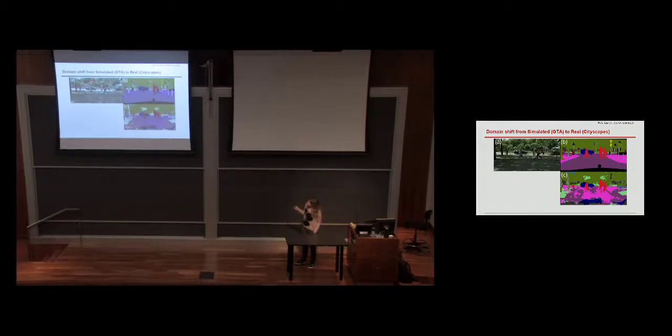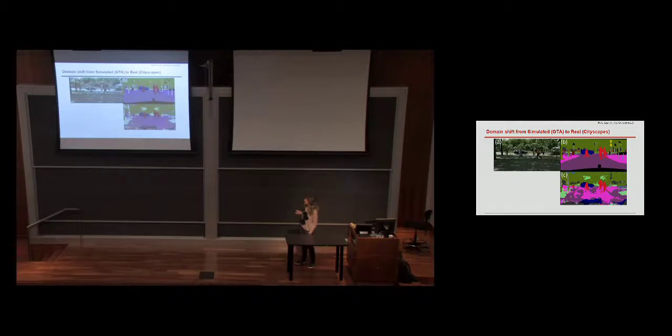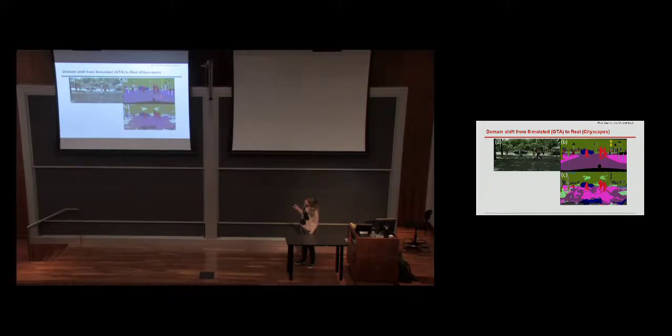Here's another example related to simulation. We're applying a segmentation model to the Cityscapes dataset — real-world images — but the model itself is trained on simulated data from Grand Theft Auto. The nice thing about GTA is that we can get all the labels automatically from the game. But it doesn't look very realistic, so there is definitely a domain shift. The ground truth label B shows what the model should predict, but C is what it actually predicts — it doesn't generalize well from simulation to the real world.